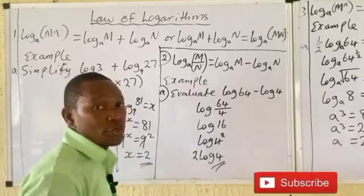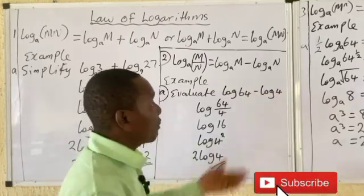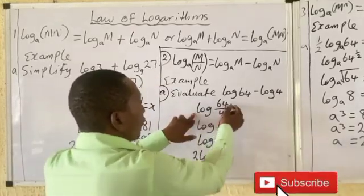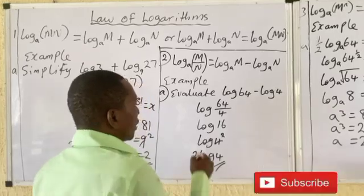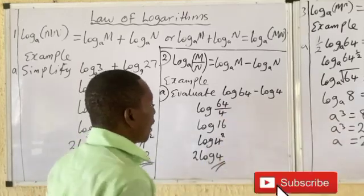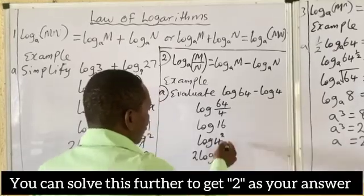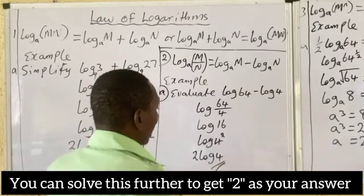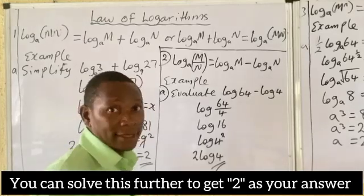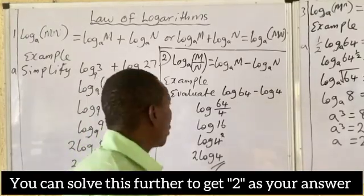Let's look at an example: log 64 minus log 4. Remember, if there is no base shown, assume the base is 10. We can write this as log of (64 divided by 4). 64 divided by 4 equals 16, and 16 is the same as 4 raised to power 2. So the answer is 2 log 4, which equals 2.